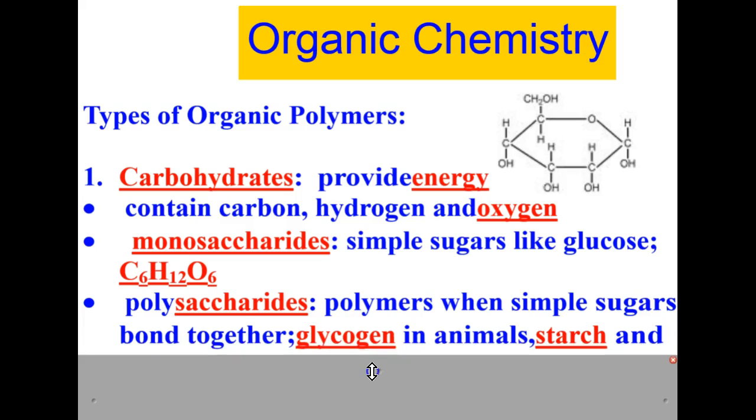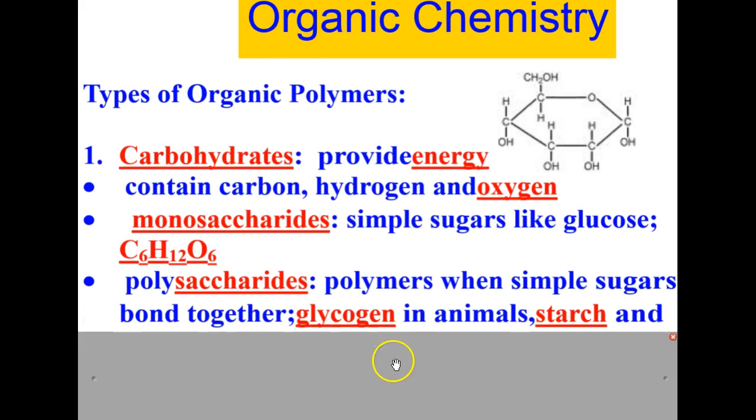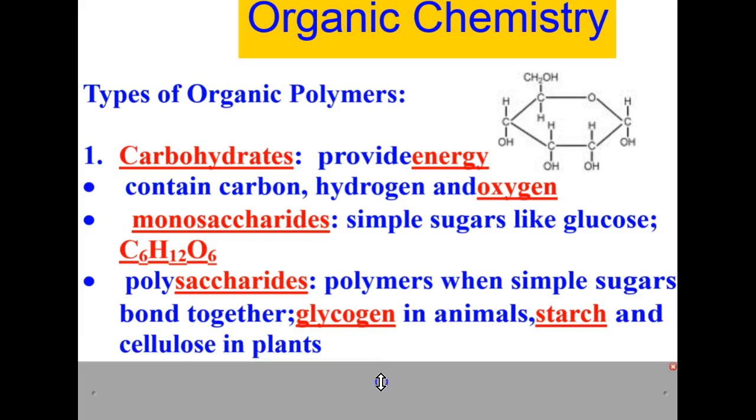There are also polysaccharides. Again, mono one, therefore simple. Poly, many. So when simple sugars bond together and form longer chains of sugars, these are called polysaccharides. Examples include glycogen in animals and starch and cellulose in plants.